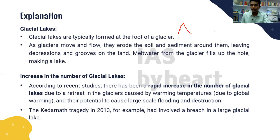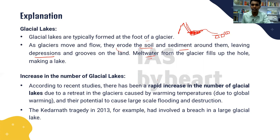As the glacier melts, deposits settle and form a lake. Once the lake accumulates too much water it overflows, causing floods in surrounding villages. As glaciers move and flow they erode soil and sediment, leaving depressions that fill with melt water. The number of glacial lakes has increased due to warming temperatures and global warming. The Kedarnath tragedy in 2013 and the recent tragedy in Uttarakhand's Chamoli district are both examples of Glacial Lake Outburst Flood (GLOF).